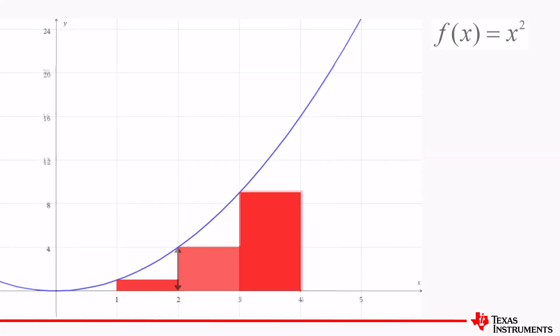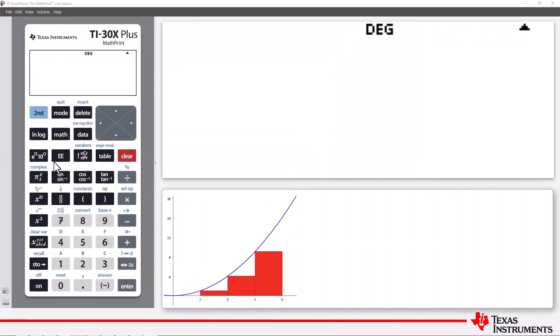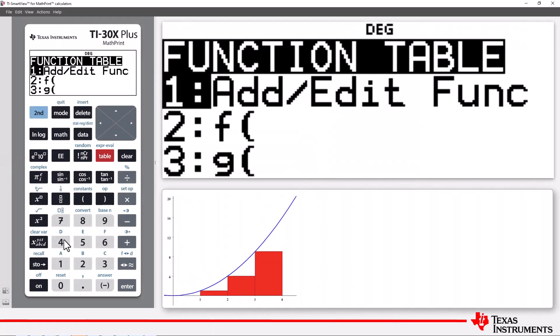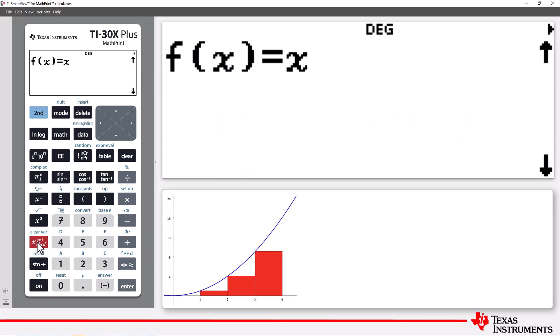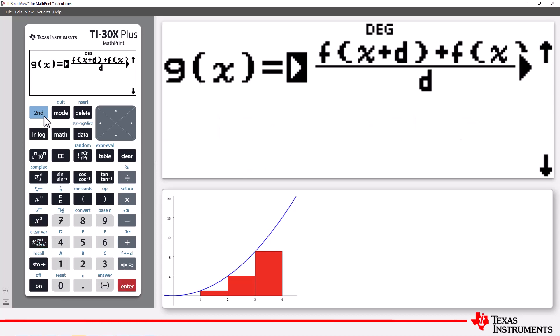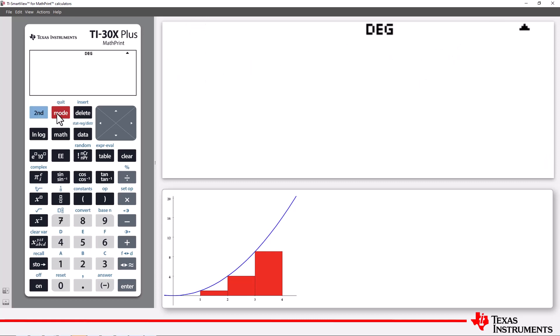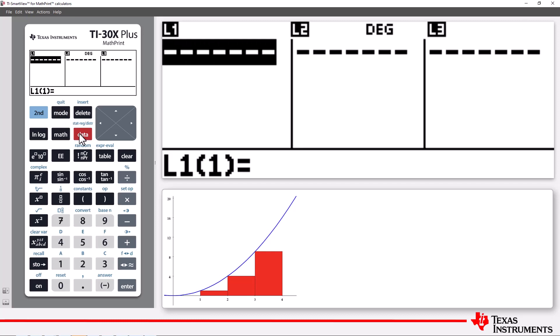Using the TI-30X Plus Math Print, I'll define the function f of x equals x squared. I could generate a table of values, but I want to be able to add up these areas, so I'll use a list. As there are only a couple of values to calculate, I'll enter the x values into list 1 manually.